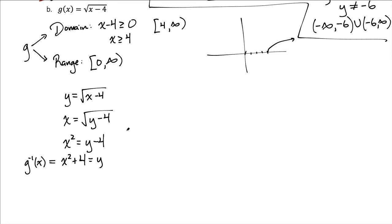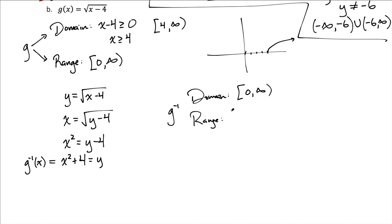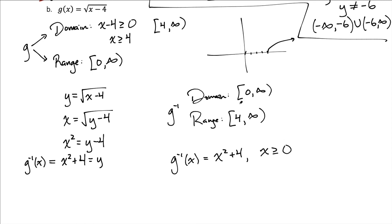Of course, the domain and range flip for g inverse. The domain of g inverse is the range of g, which is 0 to infinity. And the range of g inverse is the domain of g, which was 4 to infinity. So our inverse function, while it has the expression x squared plus 4, we have to include the restriction that x has to be greater than or equal to 0.